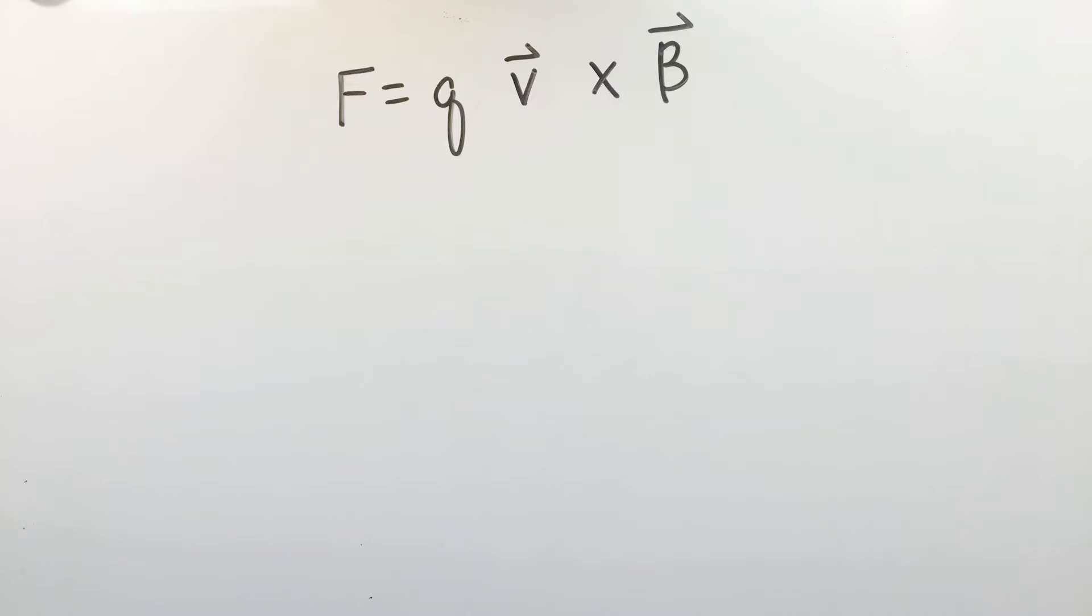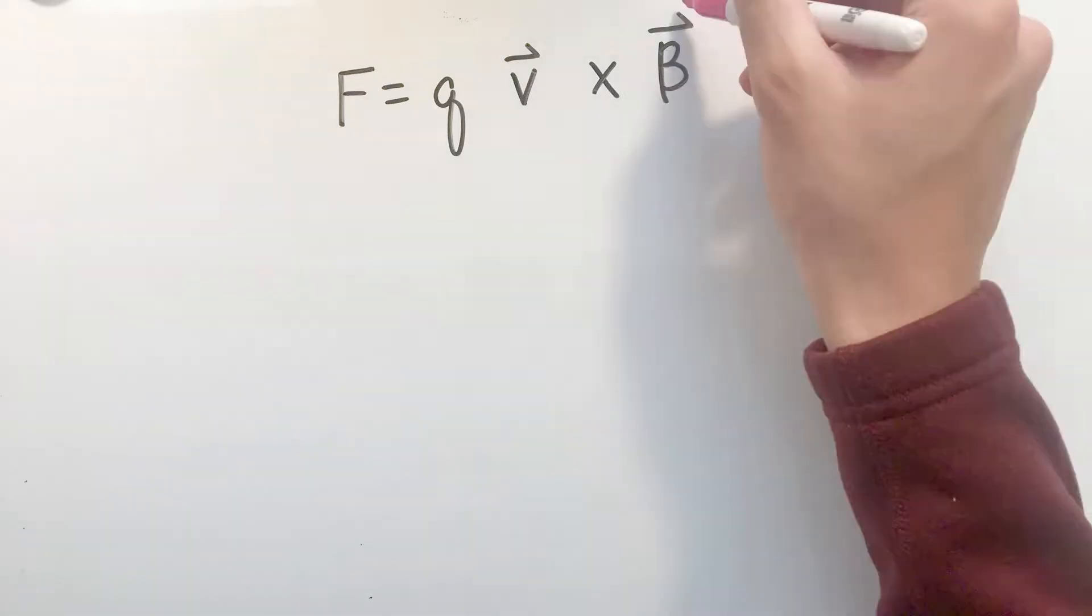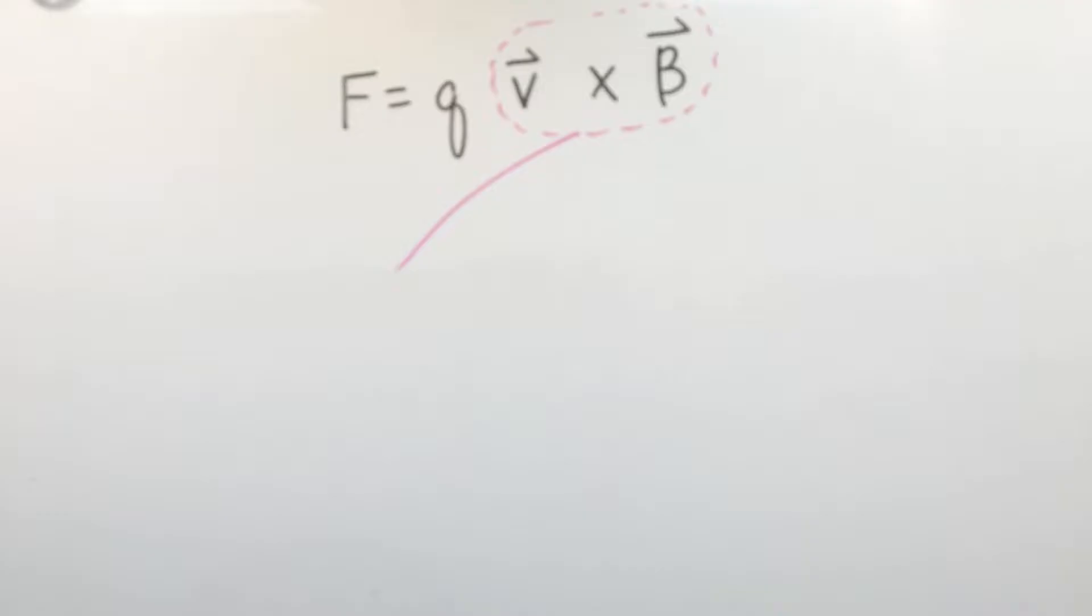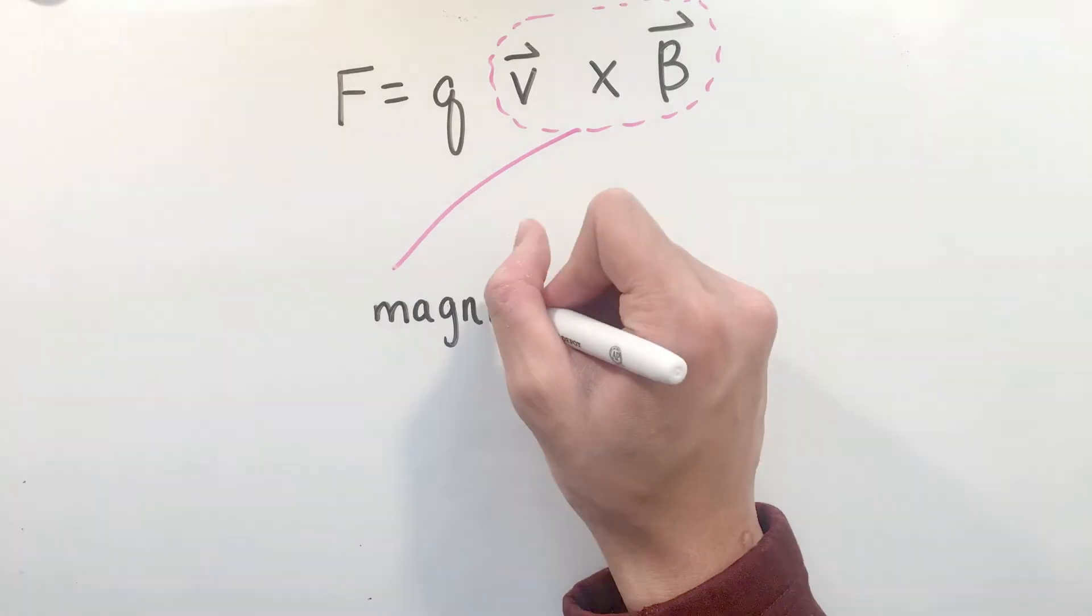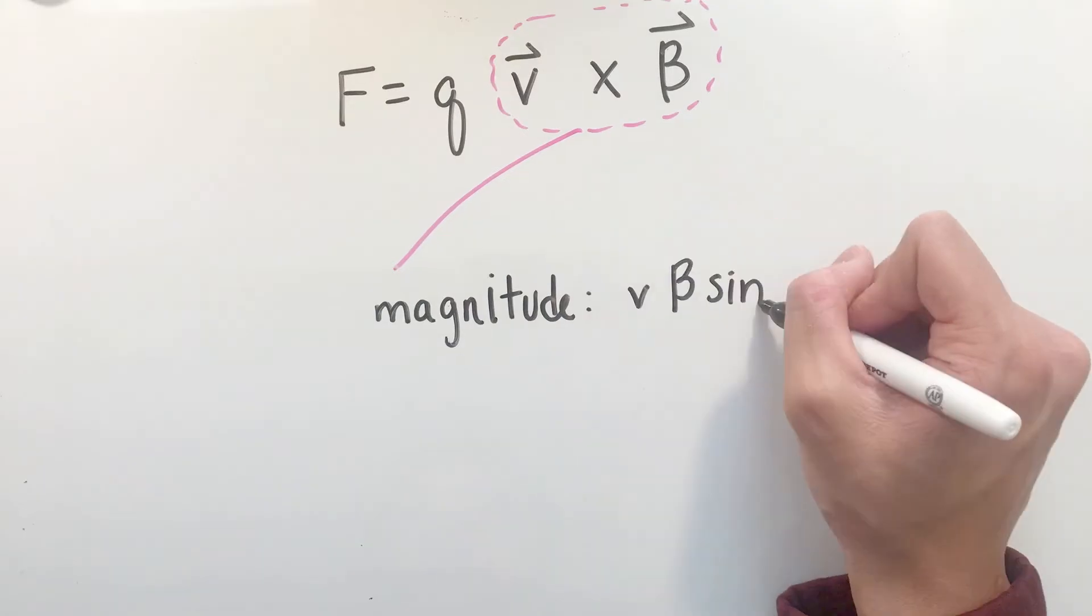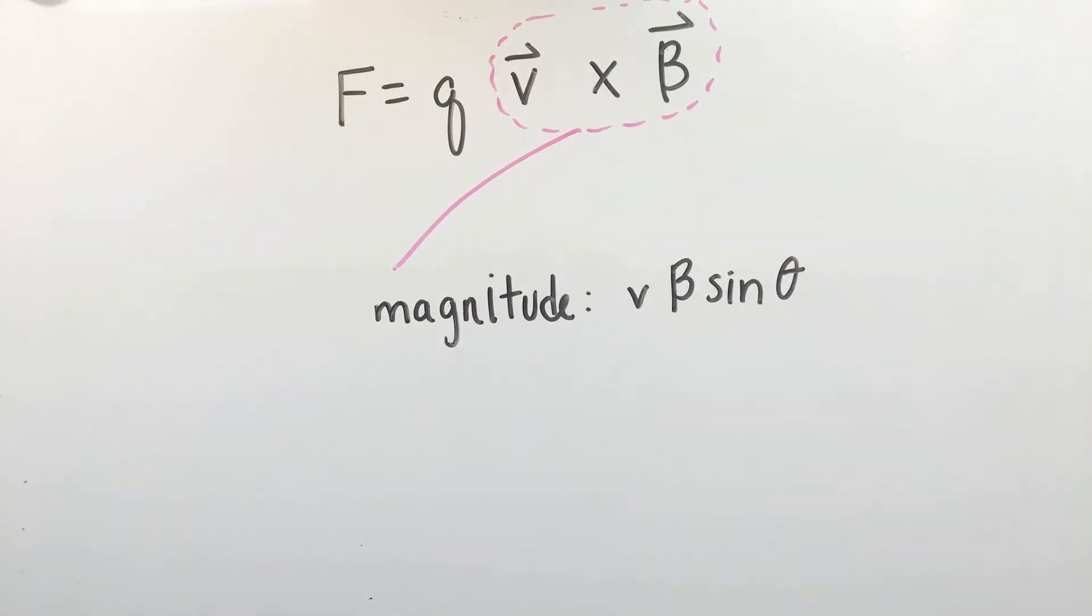The first thing to note is that this force involves the cross product between two vectors, velocity and magnetic field. Just as a quick review, the cross product has a magnitude of the scalar product of the vector's magnitudes times the sine of the angle between them, with a direction that can be calculated using the right-hand rule.